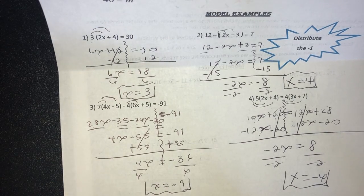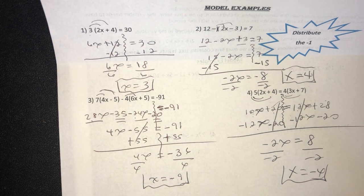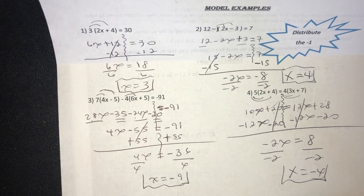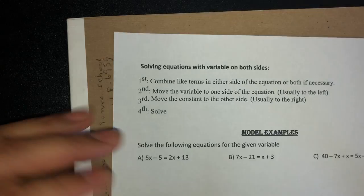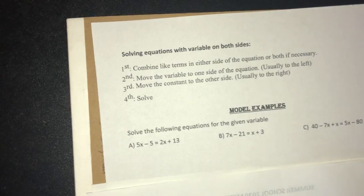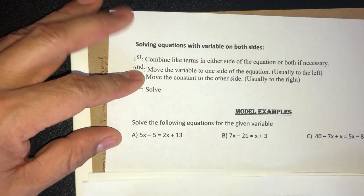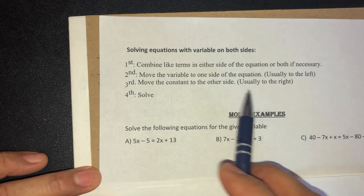That problem was actually an introduction to the next method. We've done combining like terms and the distributive property. Now we're going to do our third method: variables on both sides of the equation. Here's what you do: combine like terms on either or both sides if necessary, then move the variable to one side — usually the left — and move the constant to the other side.